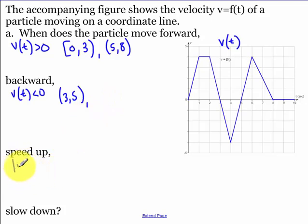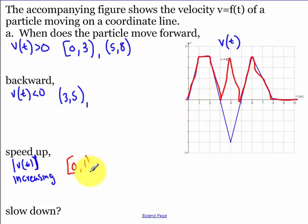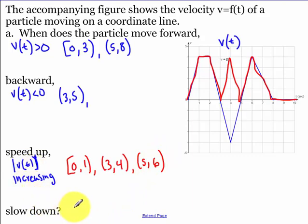Speeding up corresponds to the absolute value of velocity increasing. Drawing the speed curve — all negative y-values of the velocity curve become positive, reflecting across the x-axis. The particle is speeding up from zero to one, three to four, and five to six. Slowing down is when the absolute value of velocity is decreasing: from two to three, four to five, and six to eight.